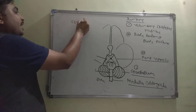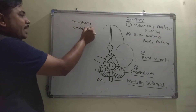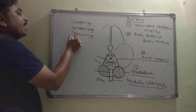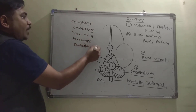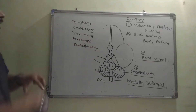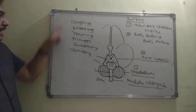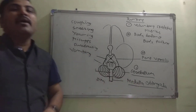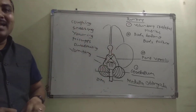The medulla oblongata also has centers for coughing, sneezing, yawning, hiccups, swallowing, and vomiting. All these centers are located in the medulla oblongata, completing our study of the hindbrain.